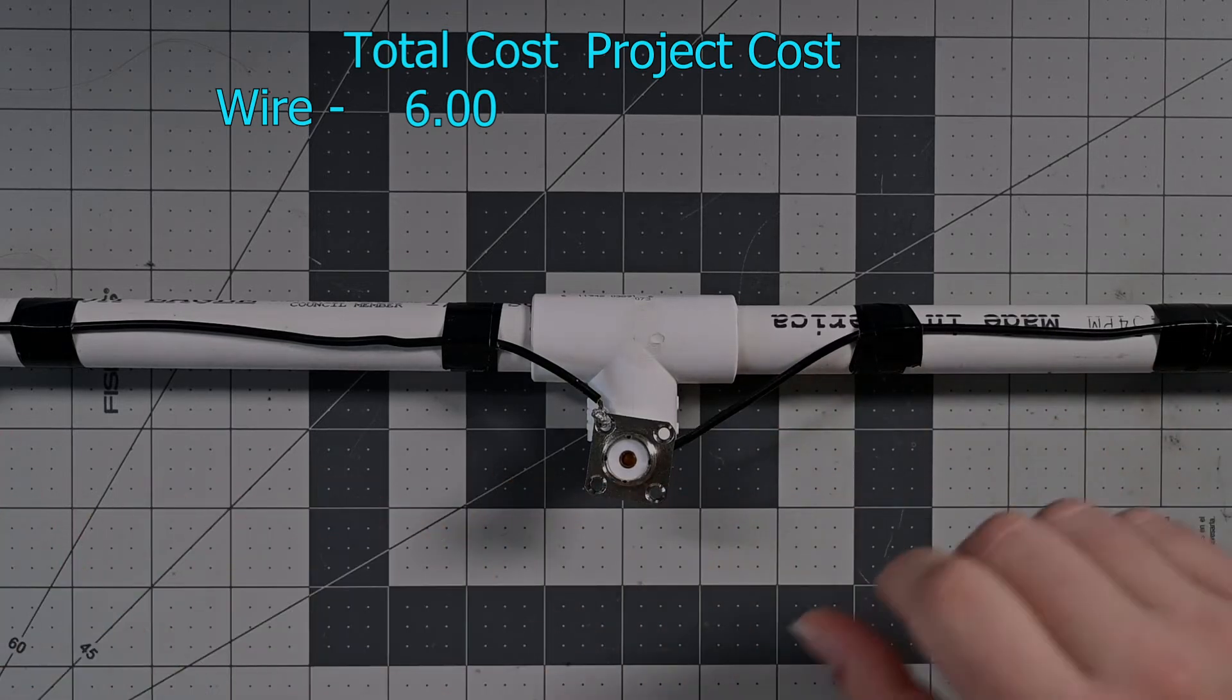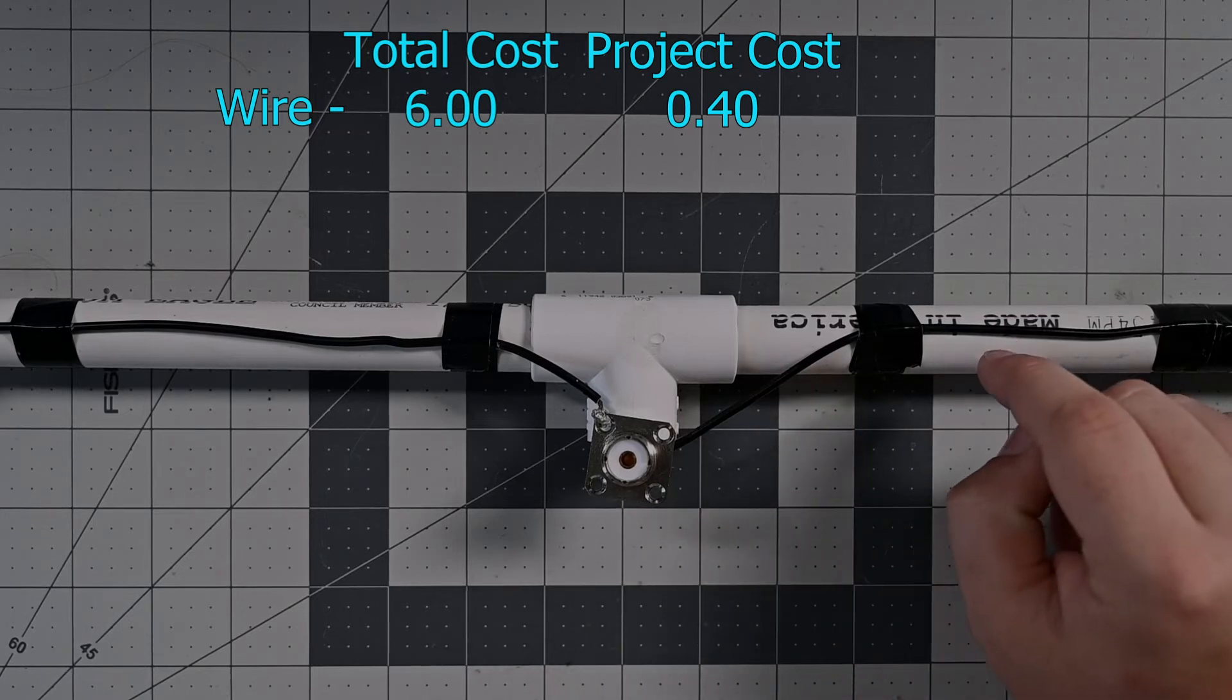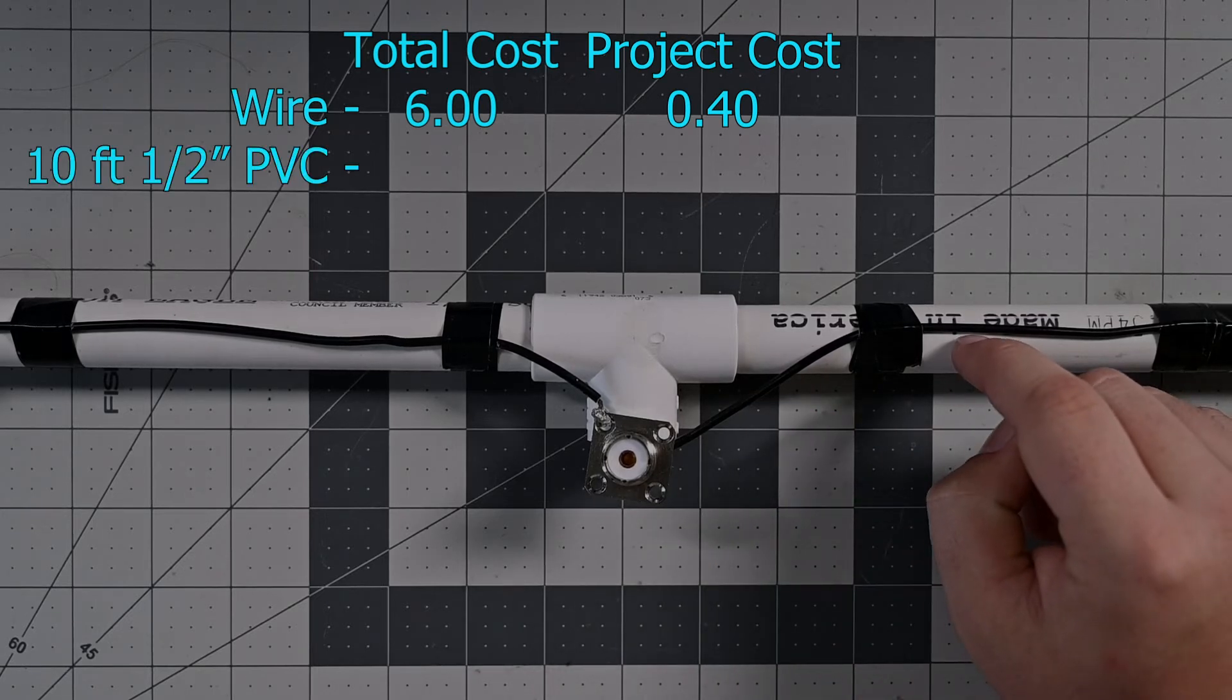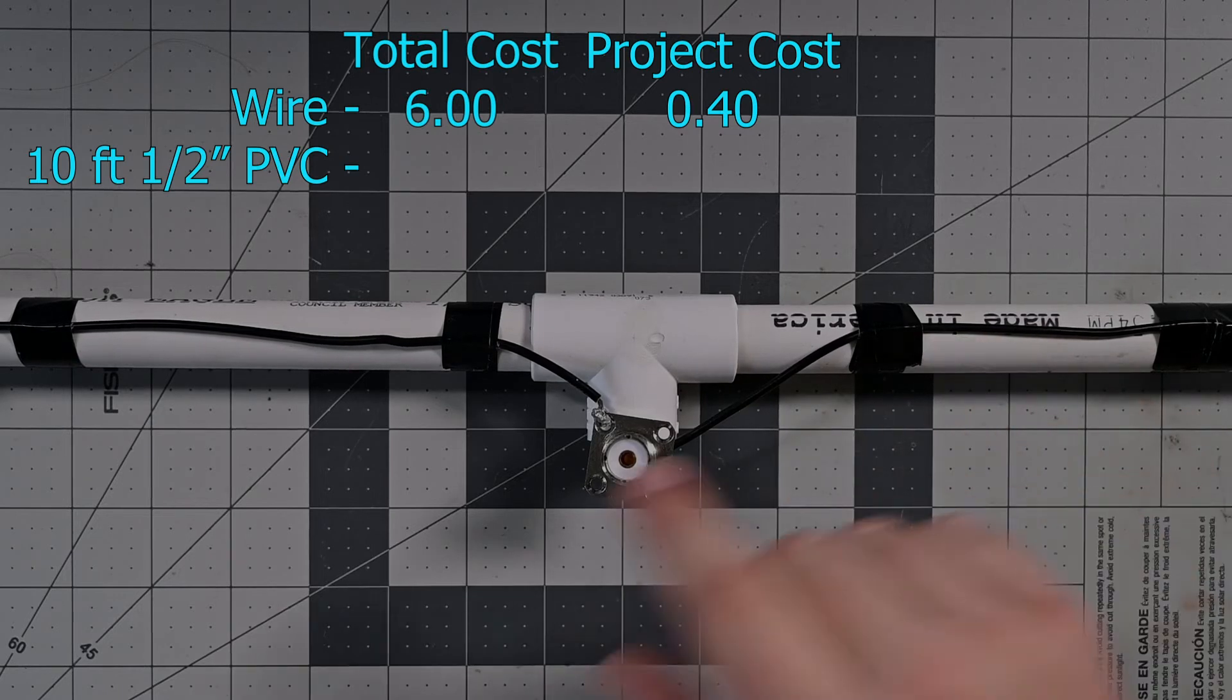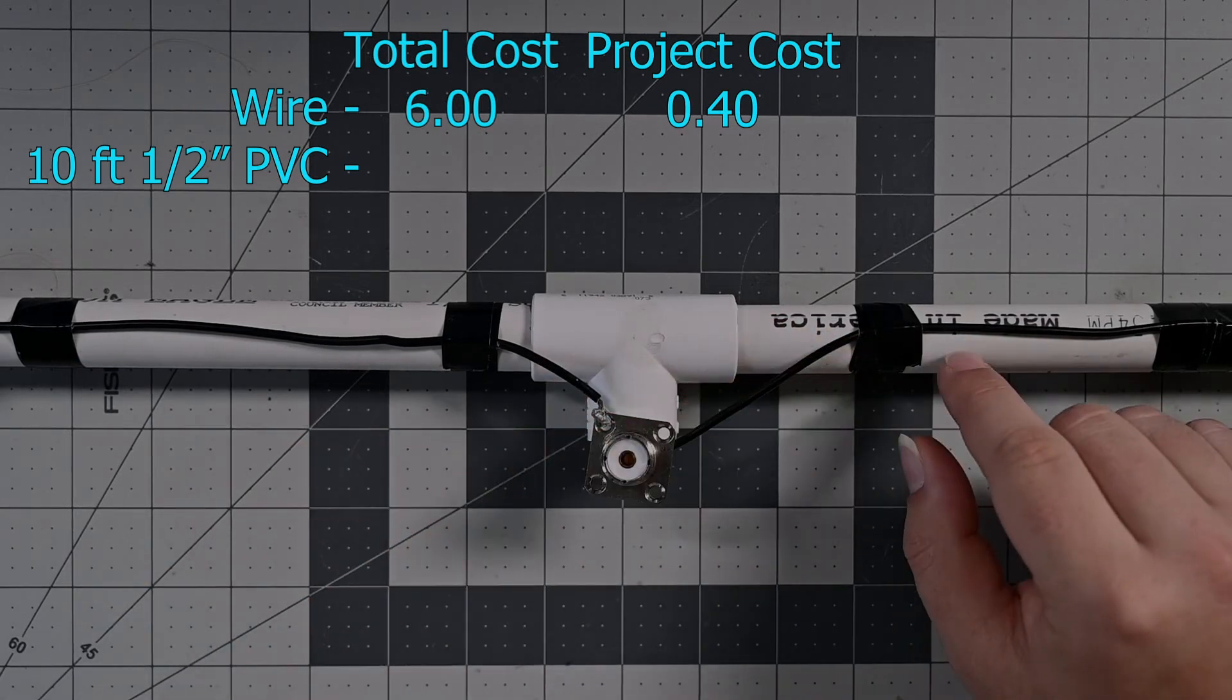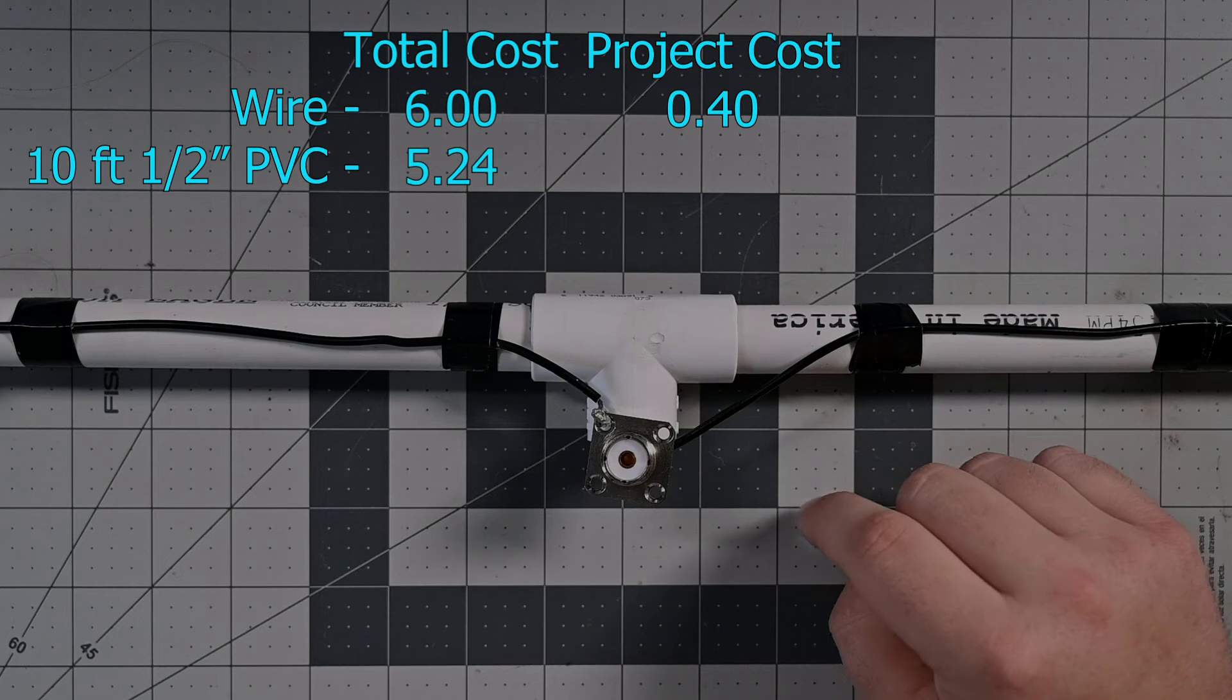Of that, the amount that we actually used here comes up to $0.40 with that cost. The PVC, I bought a 10 foot piece of PVC. You may already have this, but 10 foot piece of JM Eagle Schedule 40, one half inch PVC. I should have mentioned that earlier in the build. This is half inch. All this is half inch stuff. The half inch Schedule 40 PVC, 10 feet of it was $5.24 by today's price.